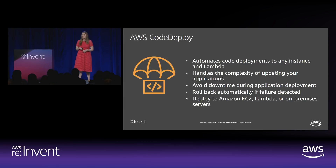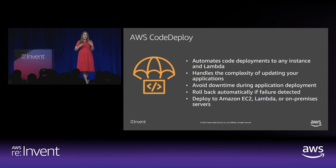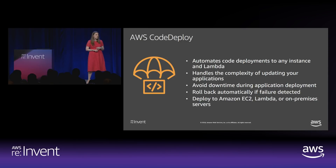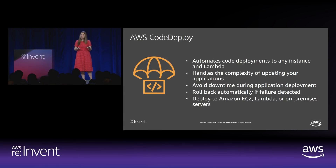For deploying to staging and production environments, I use AWS CodeDeploy. CodeDeploy automates code deployments to any instance and to Lambda — it handles all the complexity of updating your applications without you having to write a lot of code. It avoids downtime during application deployment and rolls back automatically if any failure is detected, making it safe for automating deployments to your production system. CodeDeploy deploys to EC2, Lambda, and even on-premise instances.